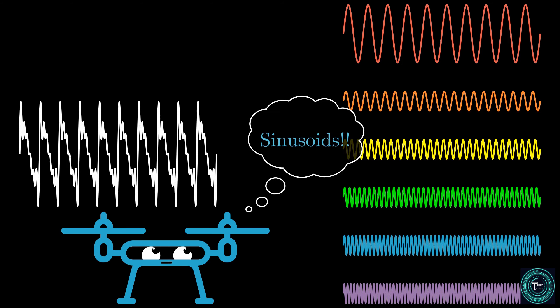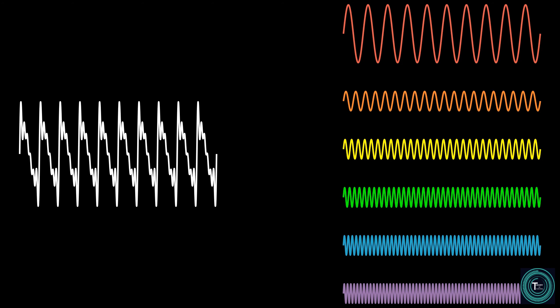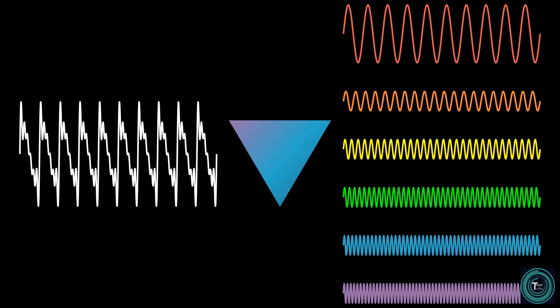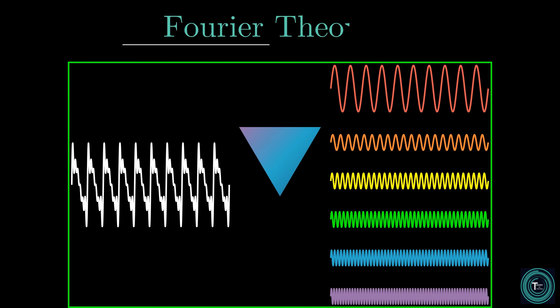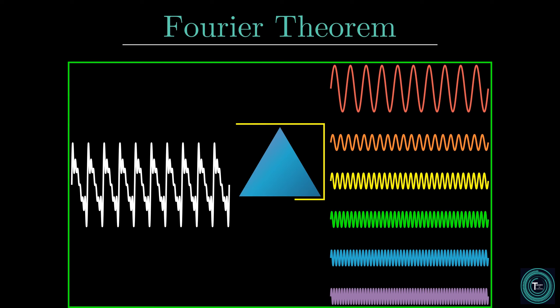Fourier argued that any time function can be broken down to a sum of sinusoids. And those sinusoids are the formal building block he utilised to analyse any time domain signal.